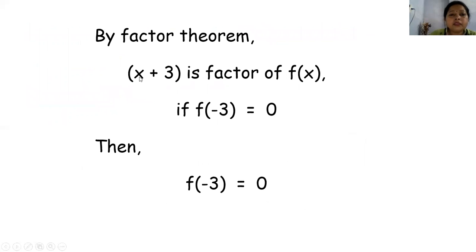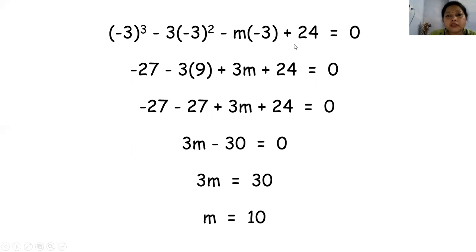By factor theorem, x plus 3 is a factor of f(x) if f(minus 3) equal to 0. तो यानि कि x plus 3 तब factor होगा f(x) का जबकि उसका remainder 0 हो. तो हमने remainder को 0 कर दिया — f(minus 3) उसका remainder है, उसको हमने 0 के equal कर दिया. अब function में x की value put करके, उसको equal to 0 करेंगे, तो पूरे function की value भी हमारी 0 के equal हो जाएगी.